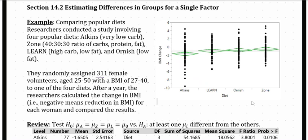In this example, researchers conducted a study involving four popular diets: the Atkins diet, which is a very low-carb diet; the Zone diet, which is a ratio of carbs, protein to fat at 40-30-30; the Learn diet, which is high-carb and low-fat; and the Ornish diet, which is low-fat. The researchers randomly assigned 311 female volunteers, all between the ages of 25 to 50 and all with a BMI in the range of 27 to 40, so they were all in the obese range. Participants were randomly assigned to only one of the four diets, which they had to maintain for the course of a year. After a year, the researchers calculated the change in BMI — a negative change means a reduction in BMI, which is a good result.